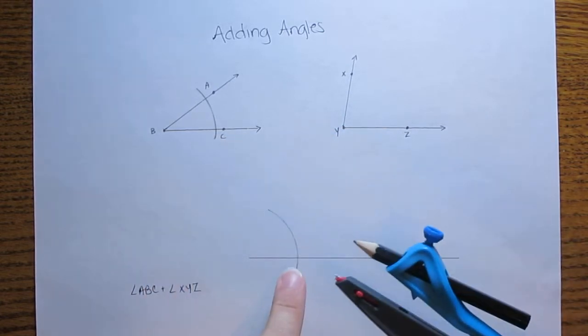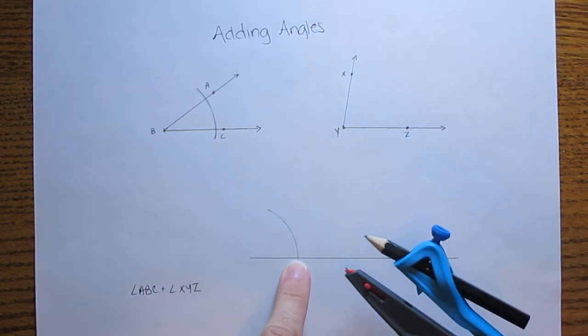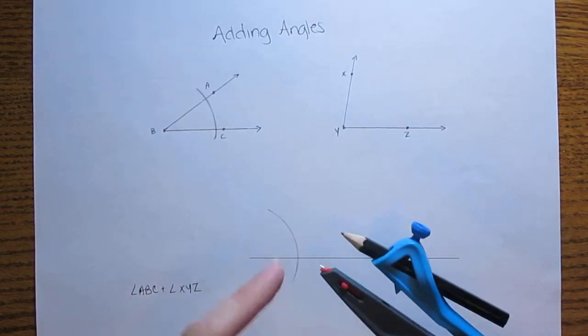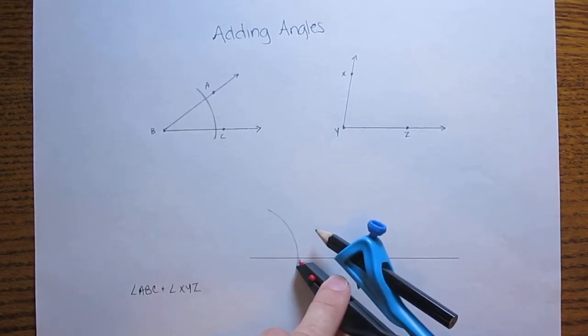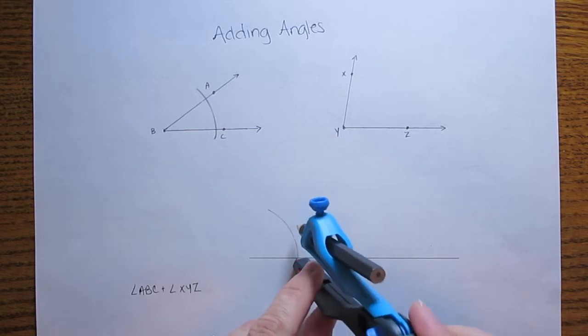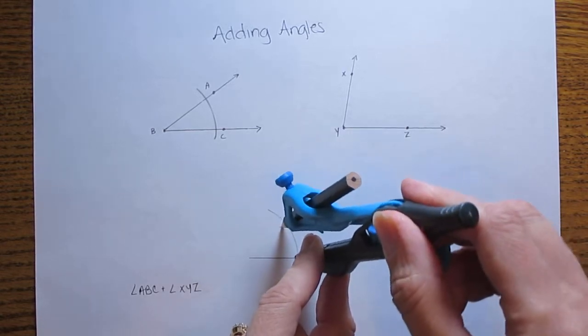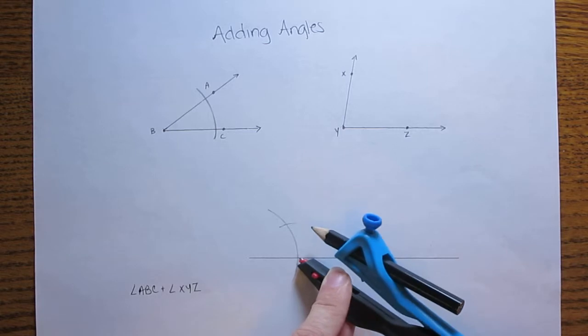I'm going to take that now over to the arc that I just made on my line segment and put the pointed end of my compass down where the arc and the segment met and I'm going to make a mark on the first arc.